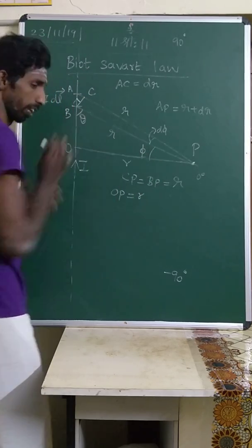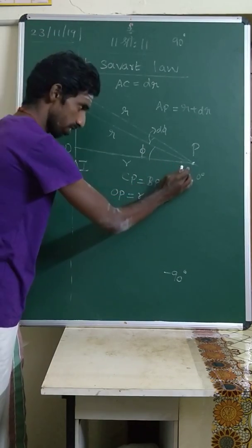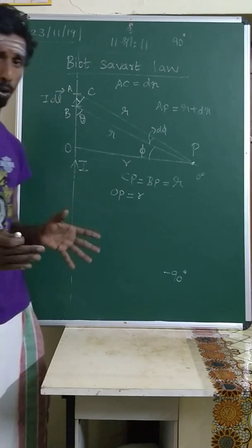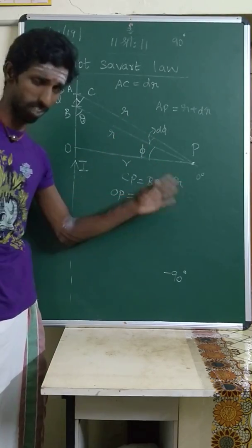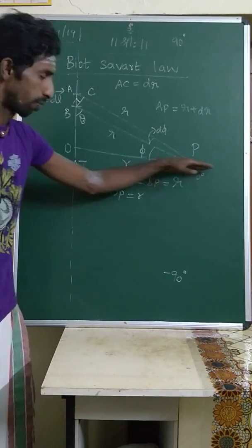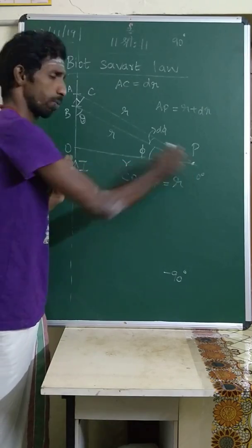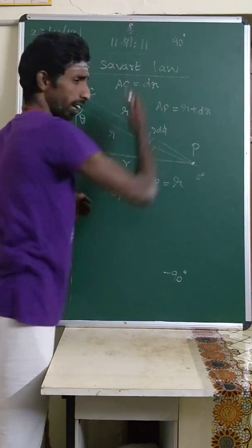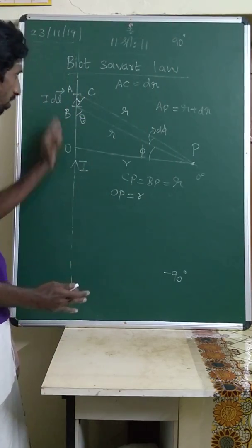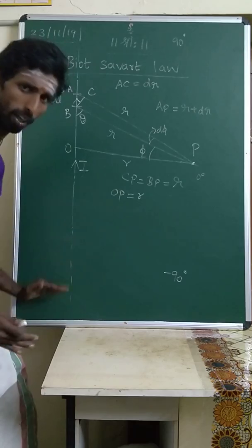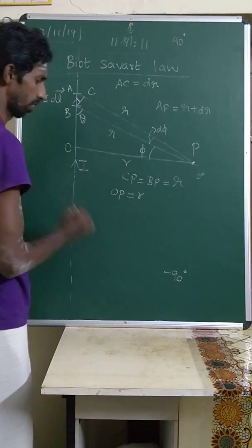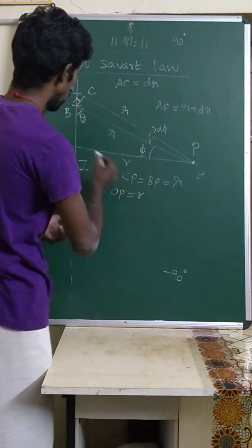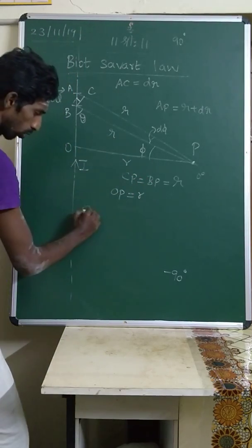This r is not a variable, because we are finding the magnetic field at this fixed distance only. I am considering this as the center, and the distance from the center to the point where I am finding the magnetic field will not vary — it is a constant. The angle-related quantities will vary, but OP equal to r is constant.